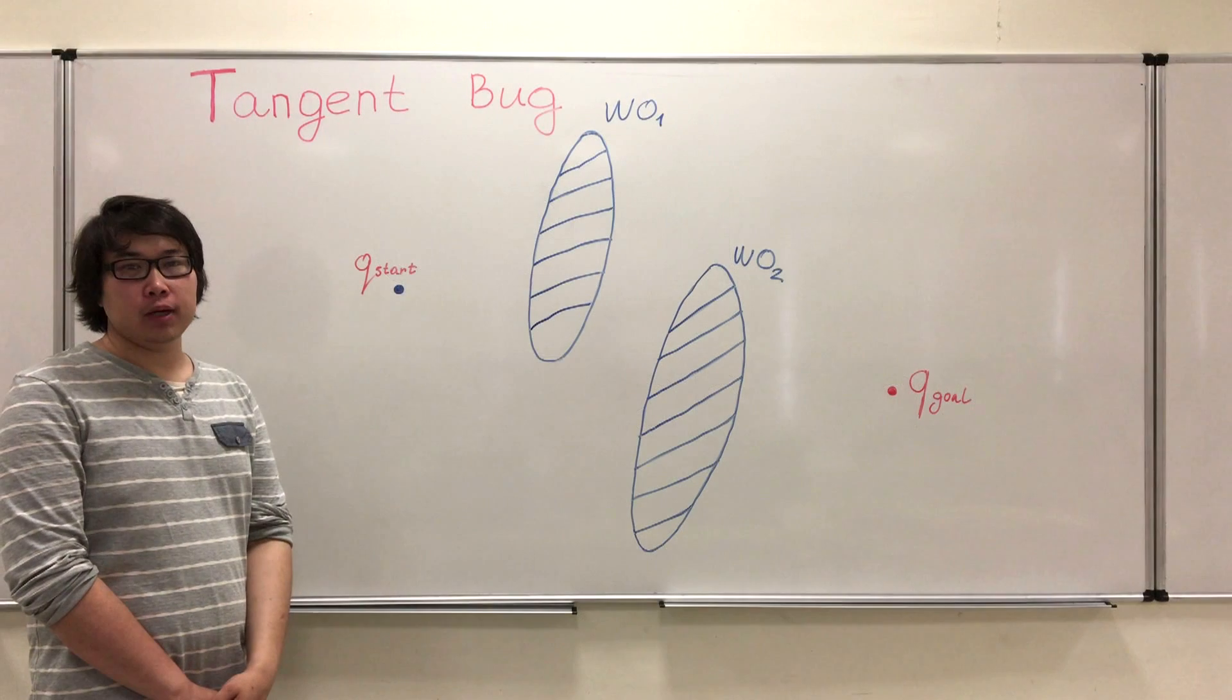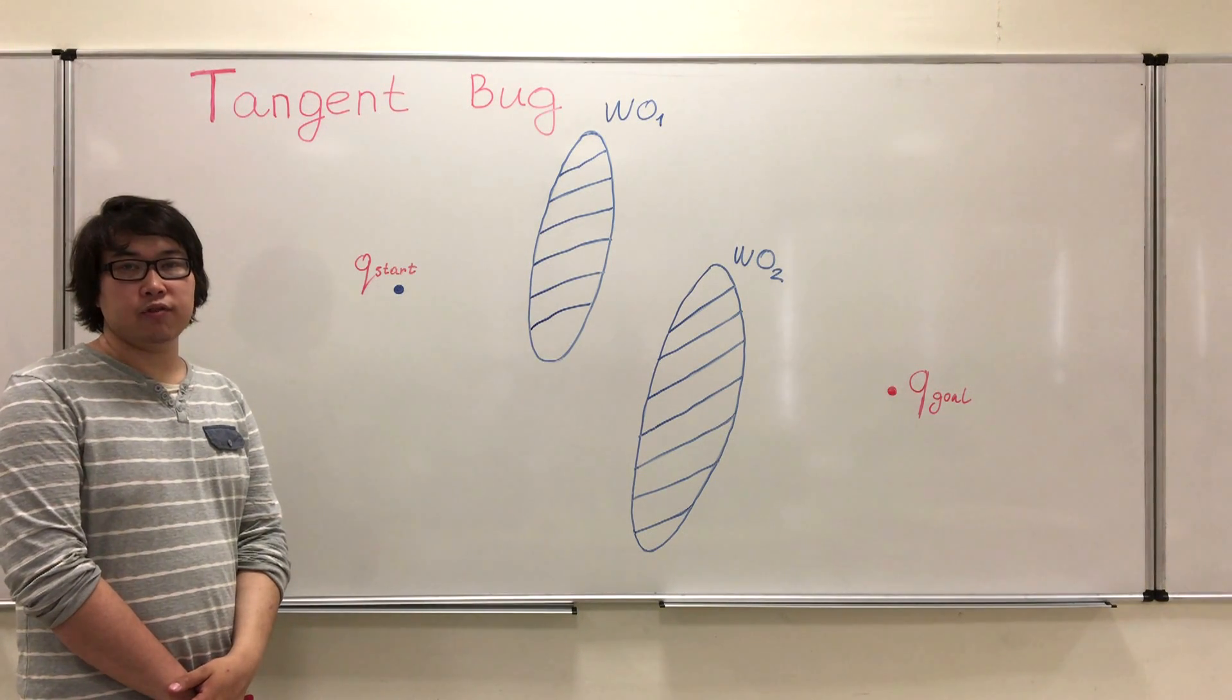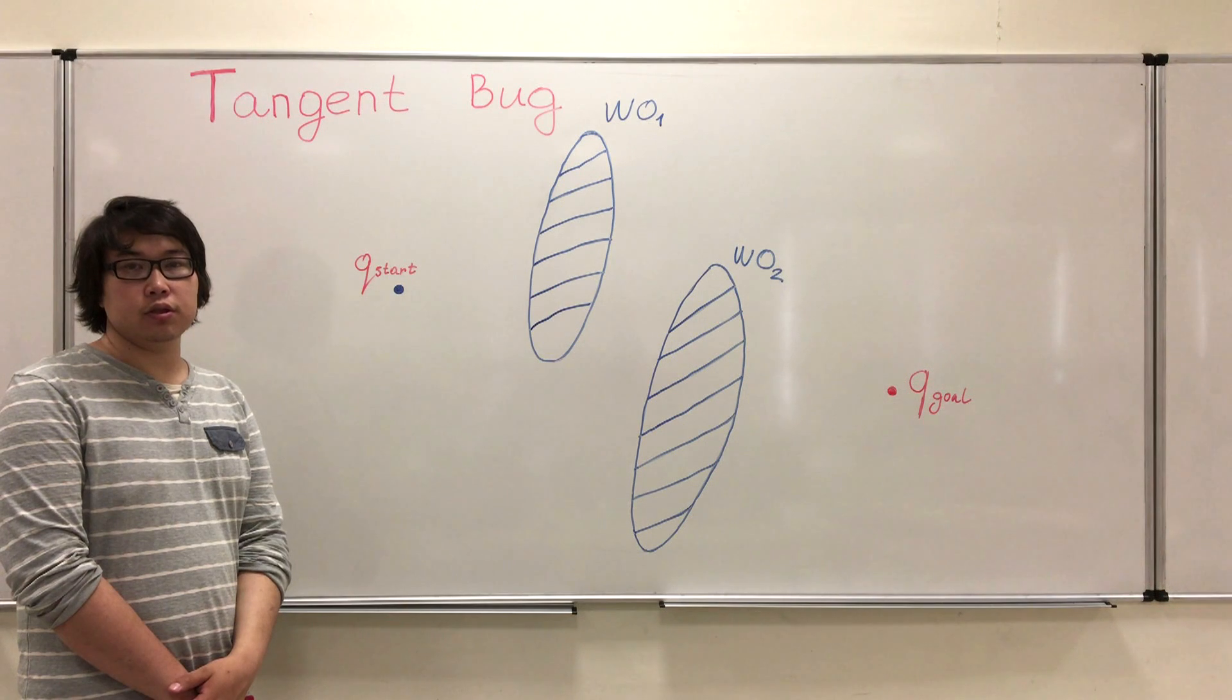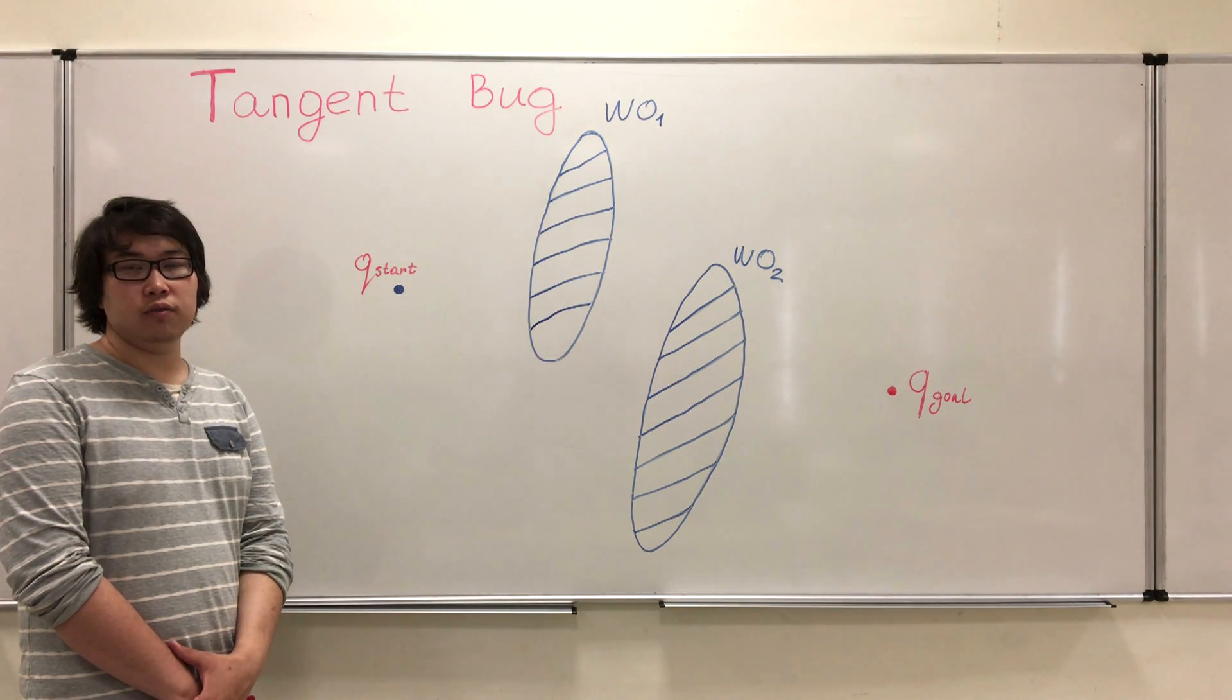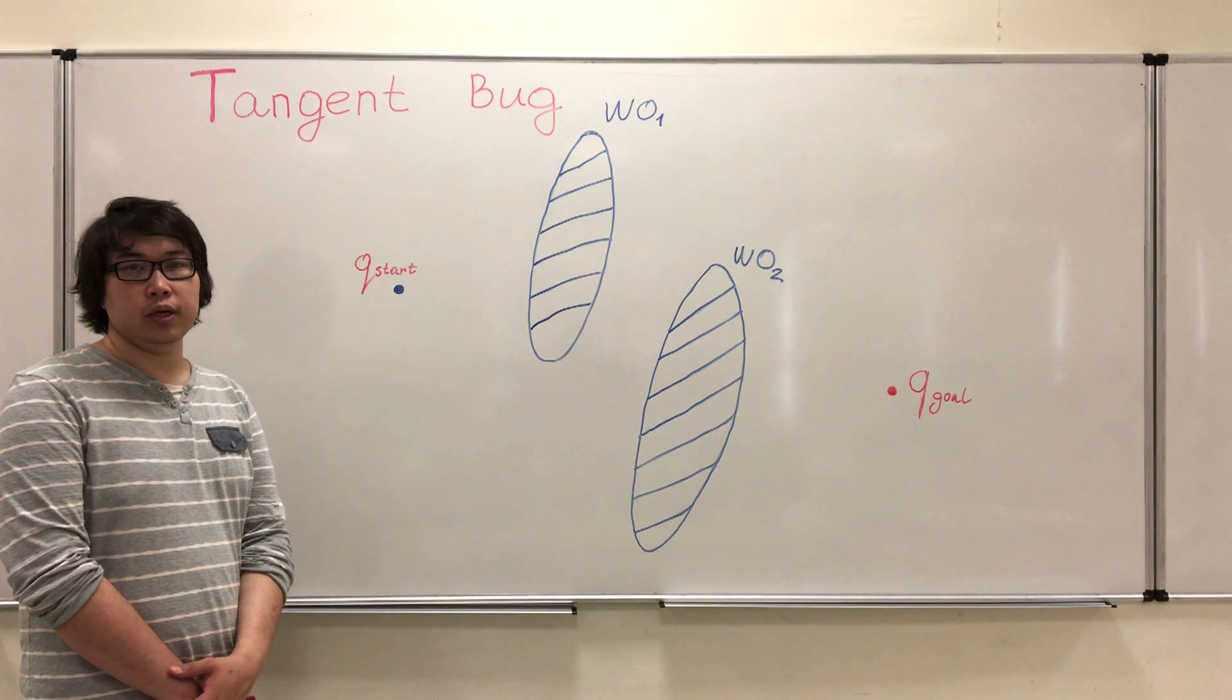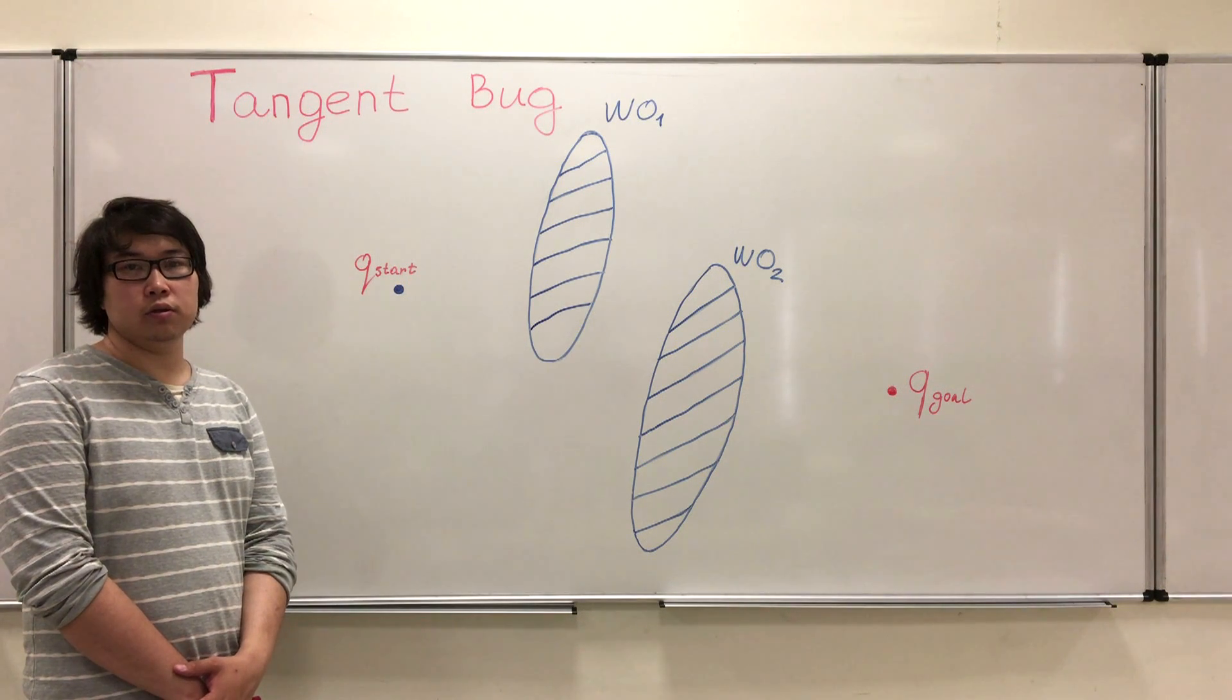In this video I will explain tangent bug path planning algorithm. A robot is equipped with a rangefinder sensor. A rangefinder sensor is a sensor which emits light in 360 degrees around itself and if a light hits an obstacle, we have distance information to that point. If not, we get an infinity, concluding that there is nothing there.